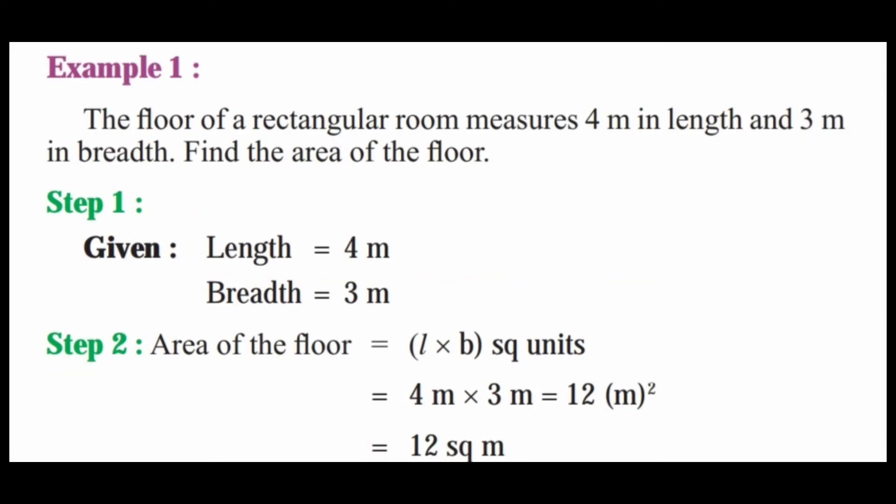Example 1: The floor of a rectangular room measures 4 m in length and 3 m in breadth. Find the area of the floor. Given: length is equal to 4 meter, breadth is equal to 3 meter. Area of the floor is equal to length into breadth, that is 4 meter into 3 meter, equal to 12 square meter.